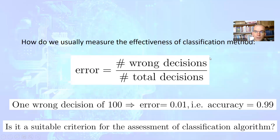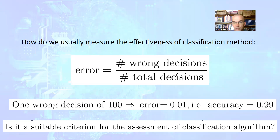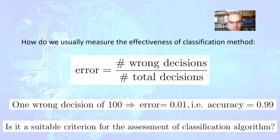How do we usually measure the effectiveness of a classification method? As we previously considered, usually we divide the number of wrong decisions by the number of total decisions. So if we have one wrong decision out of 100 samples, then our error will be 1%, or correspondingly the accuracy will be 0.99 or 99%. The question arises: is it always a suitable criterion for the assessment of a classification algorithm?